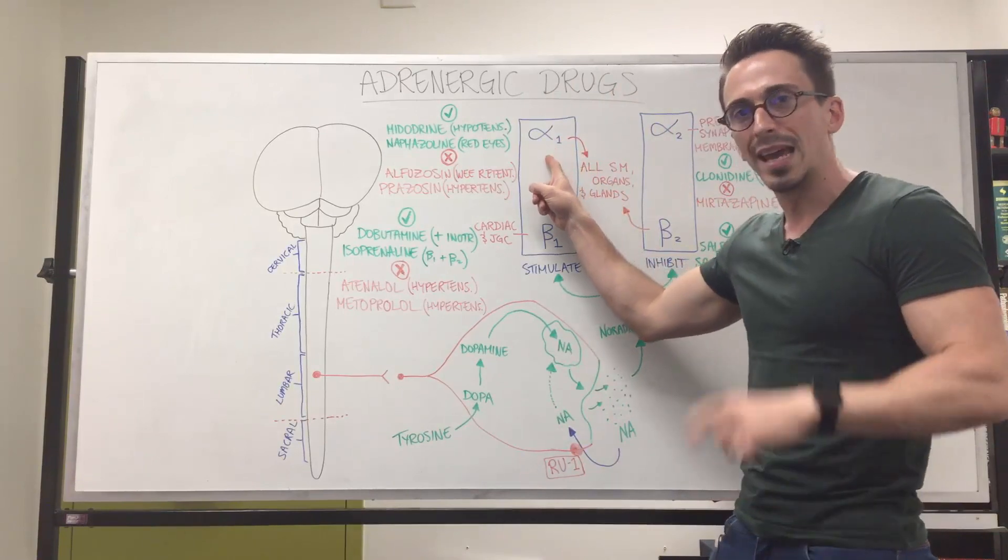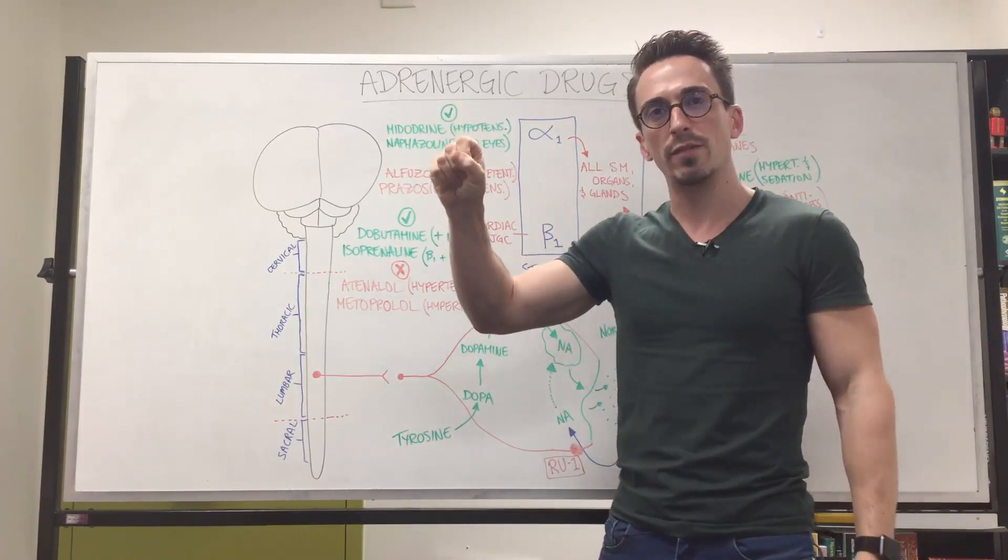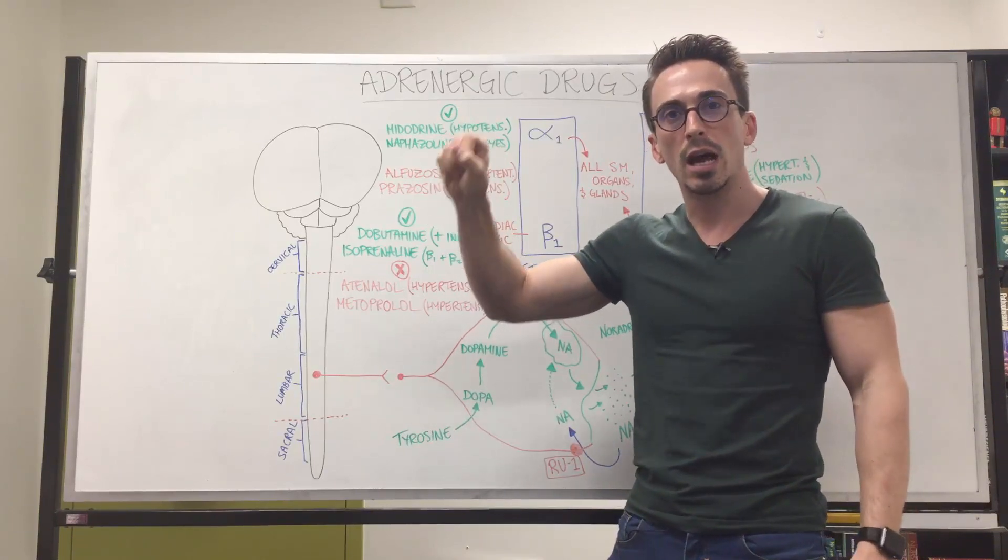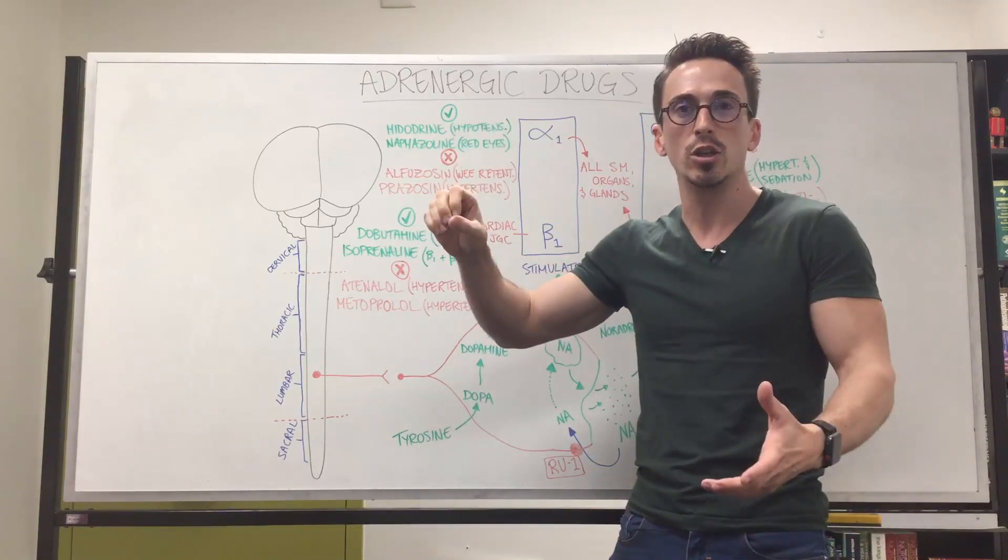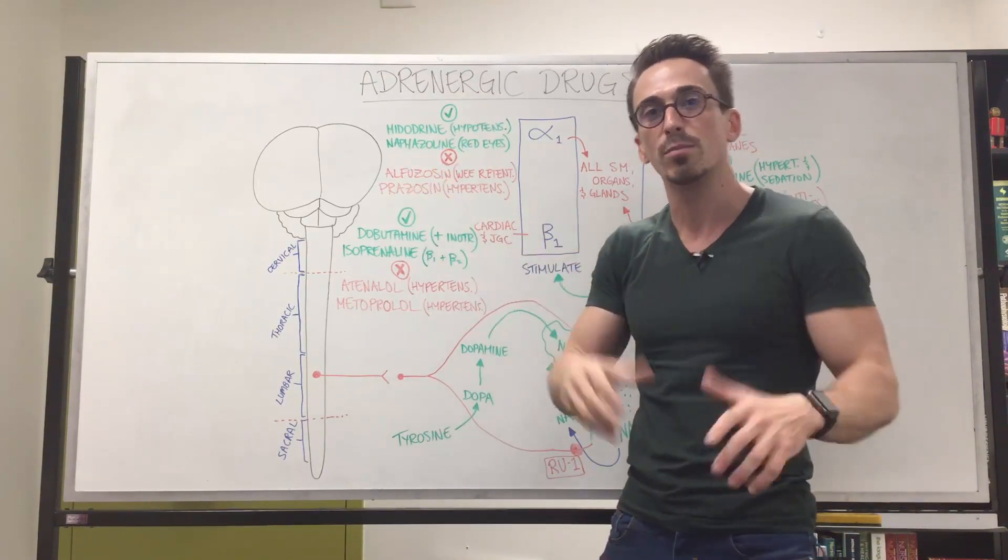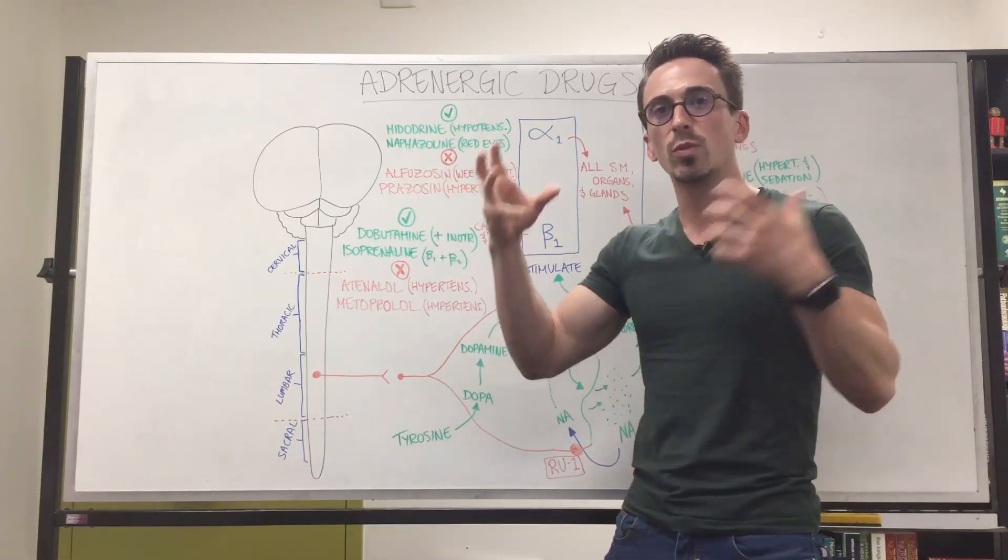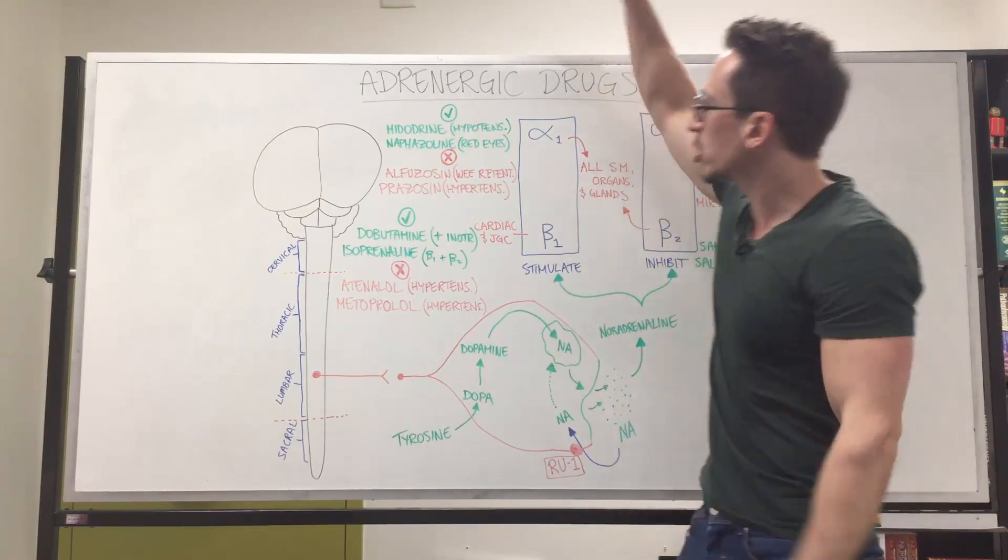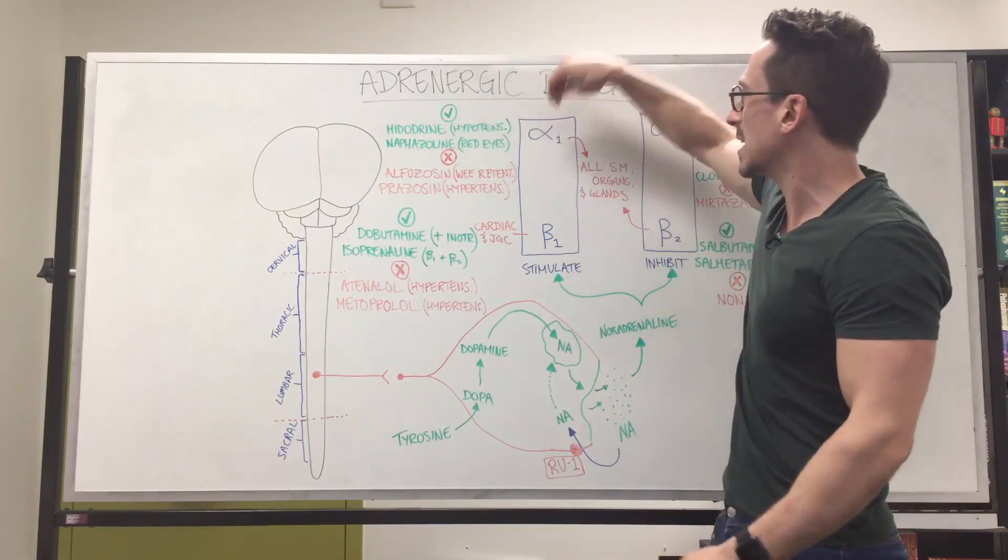If you stimulate alpha-1, it's going to constrict the blood vessels, it's going to constrict the urinary vessels, so the urinary tubes, the ureters and bladder. It's also going to constrict the smooth muscle within the gastrointestinal tract.